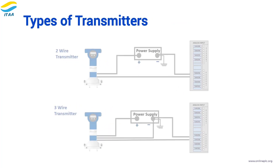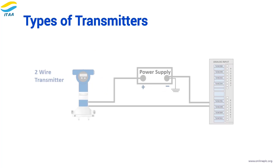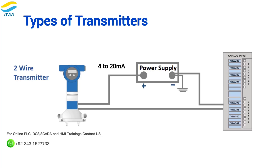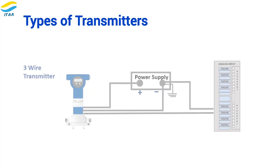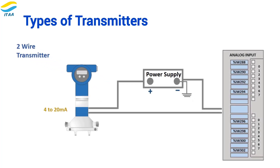Let's quickly talk about two types of transmitters you'll commonly see in industrial setups: two-wire and three-wire transmitters. Two-wire transmitters are widely used in automation — they have two wires that carry both power and the signal. In a 4 to 20 milliamp setup, the transmitter draws its power from the current loop, which makes installation simpler. Three-wire transmitters have a separate power wire, making them ideal where more stable power is required or when we need to separate signal and power lines to reduce noise interference. In this example, we're using a two-wire transmitter sending a 4 to 20 milliamp signal.